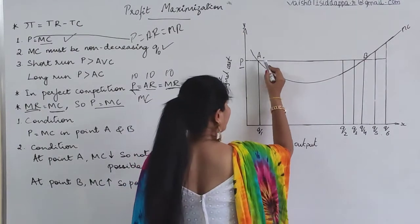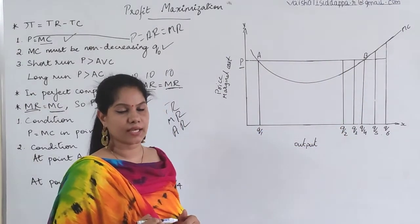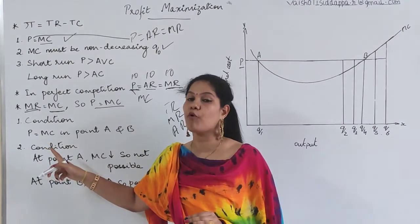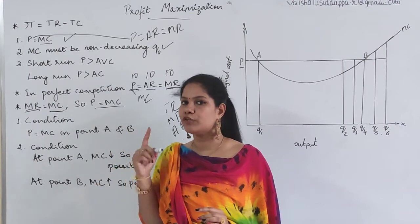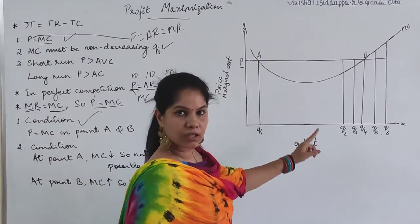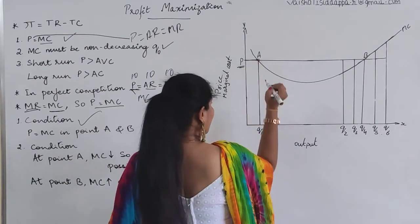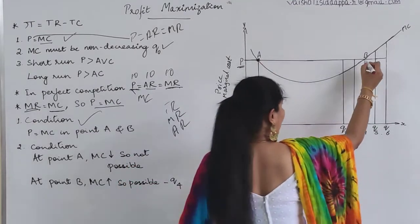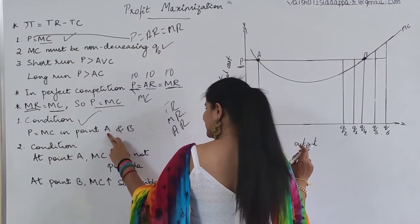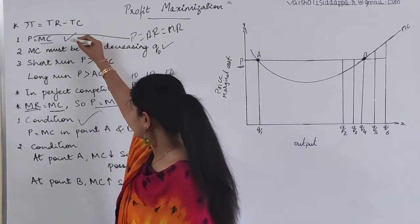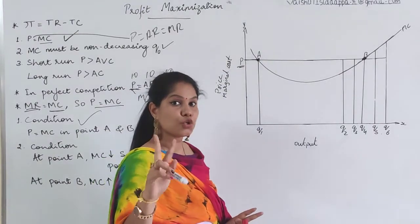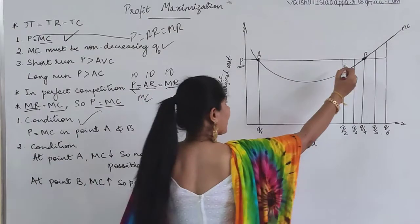The first condition says P should equal MC for profit maximization. Looking at the diagram, P equals MC at two points: point A and point B. So we have succeeded in proving the first condition — P is equal to MC at both point A and point B.